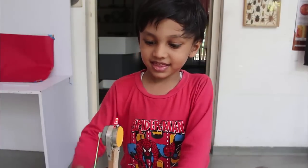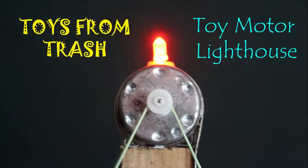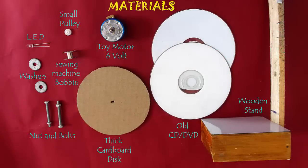As you crank the handle of this generator, an LED glows like the beacon of a lighthouse. To make this lighthouse you need a 6 volt toy motor, LED, old DVDs, screw nuts, and some other simple material.